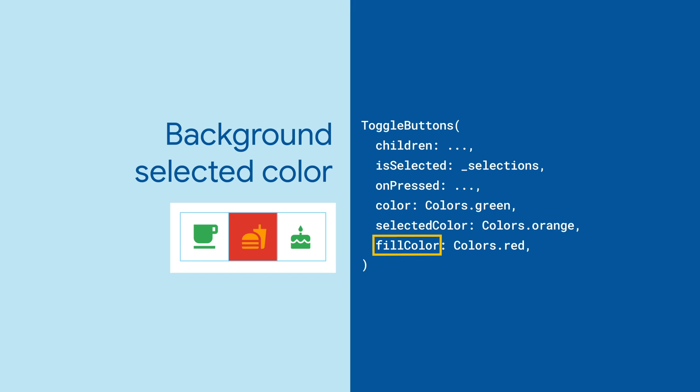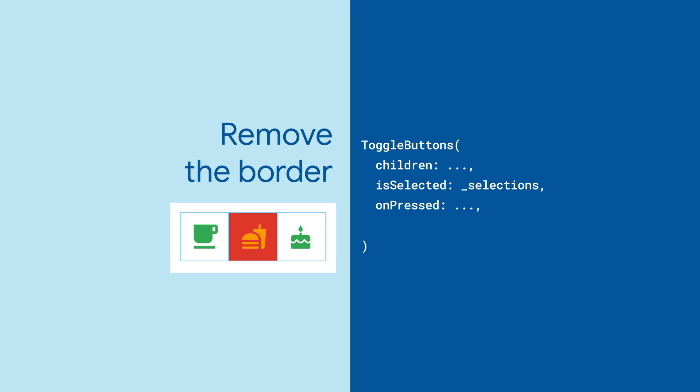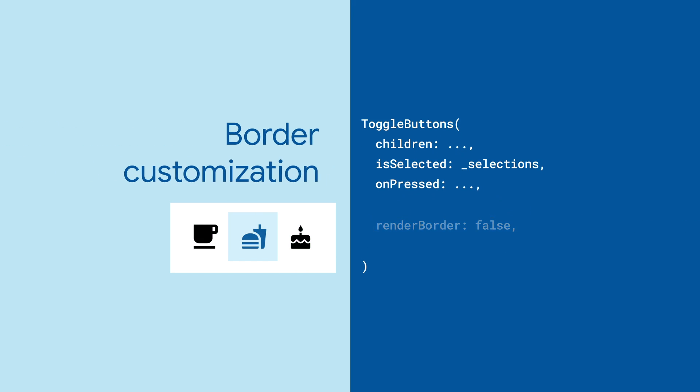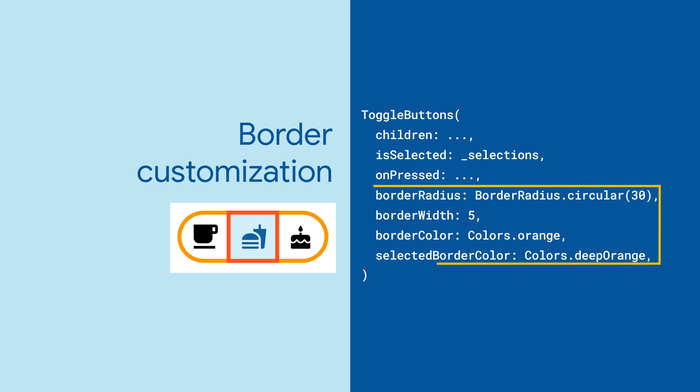You can control whether there's a border between the buttons, and the shape, color, and size of the border.